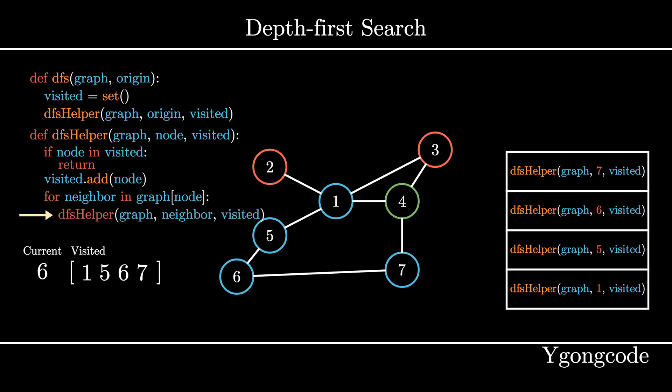In dfsHelper 7, we find another neighbor, node 4. We call dfsHelper on node 4 and add it to the call stack.